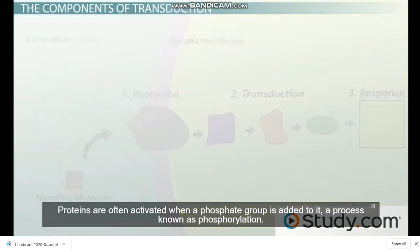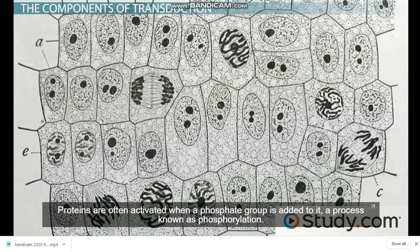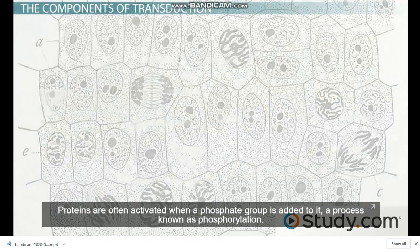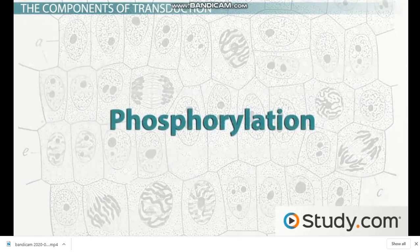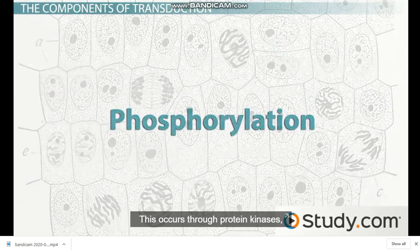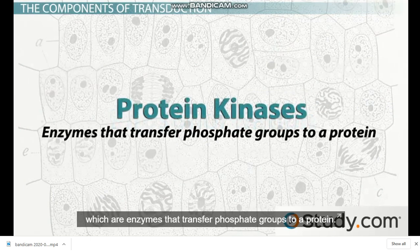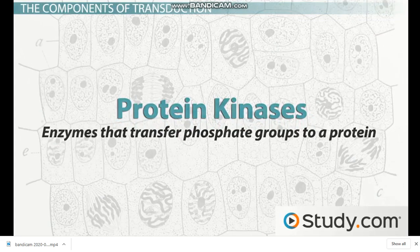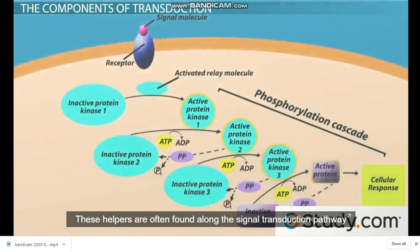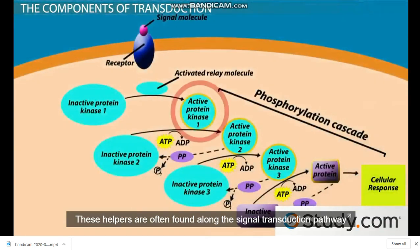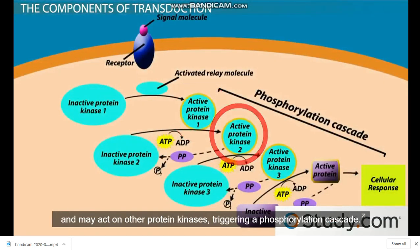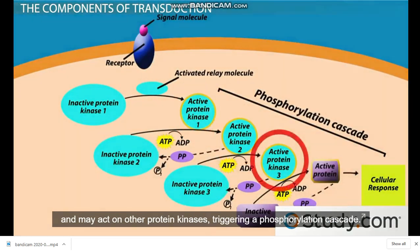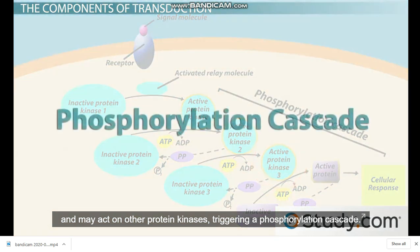Proteins are often activated when a phosphate group is added to them, a process known as phosphorylation. This occurs through protein kinases, which are enzymes that transfer phosphate groups to a protein. These helpers are often found along the signal transduction pathway and may act on other protein kinases, triggering a phosphorylation cascade.